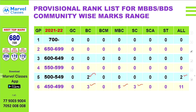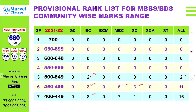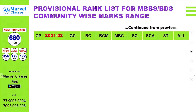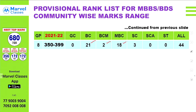The 450 to 499 range is very important and easier to get into colleges. In the 400 to 449 range, there are BC, MBC, and other category students. In the 350 to 399 range, there are 44 students: BC 21, BCM 2, MBC 18, SC 3.